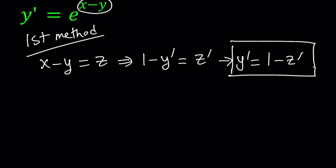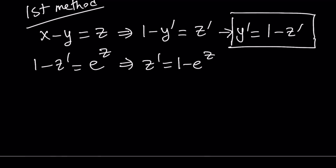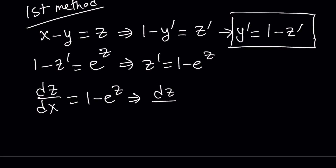So now we can go ahead and solve for y prime, and that's going to give us y prime equals 1 minus z prime. We can use this in our equation and also replace x minus y with z. Let's go ahead and do both replacements. We get 1 minus z prime equals e to the power z. From here let's go ahead and isolate z prime — that becomes 1 minus e to the power z. Since z is a function of x, let's write z prime as dz over dx equals 1 minus e to the power z.